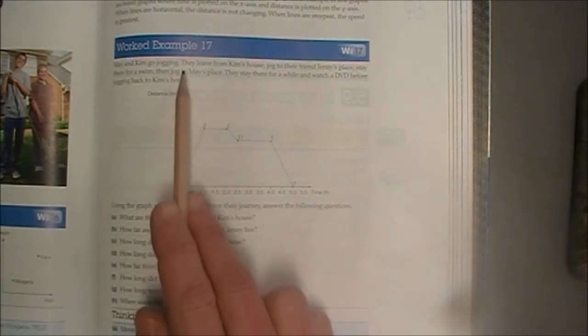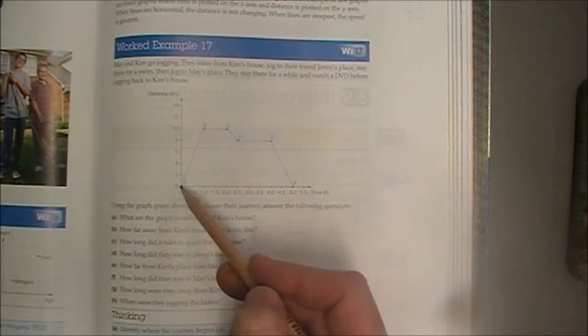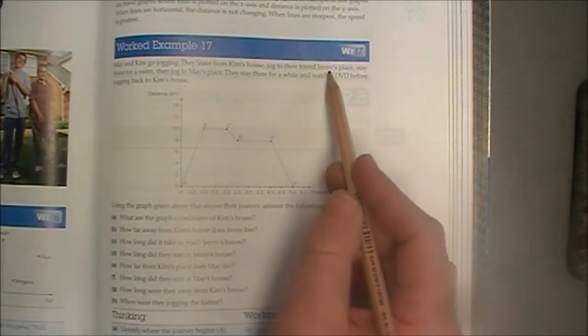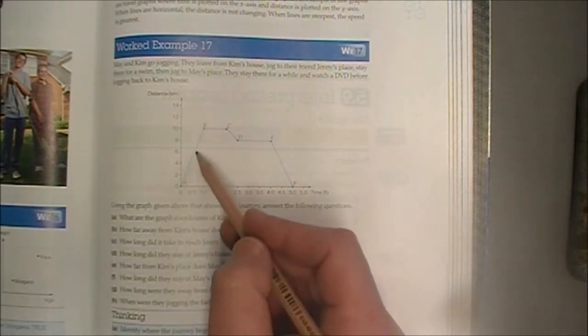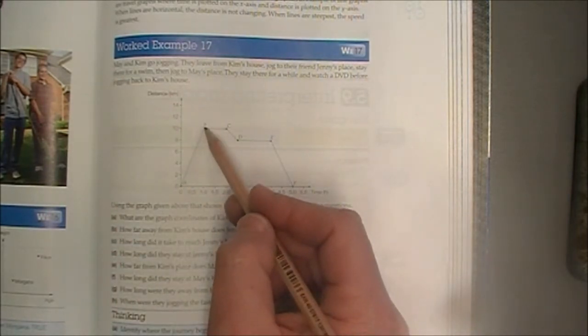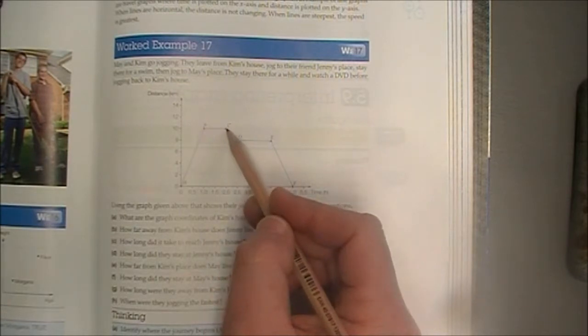So, the first thing that's said is they leave from Kim's house. So this point here is Kim's house. They jog to their friend Jenny's place, stay there for a swim. So this is while they jog to Jenny's place, so they're now at Jenny's place, and this is while they're swimming.